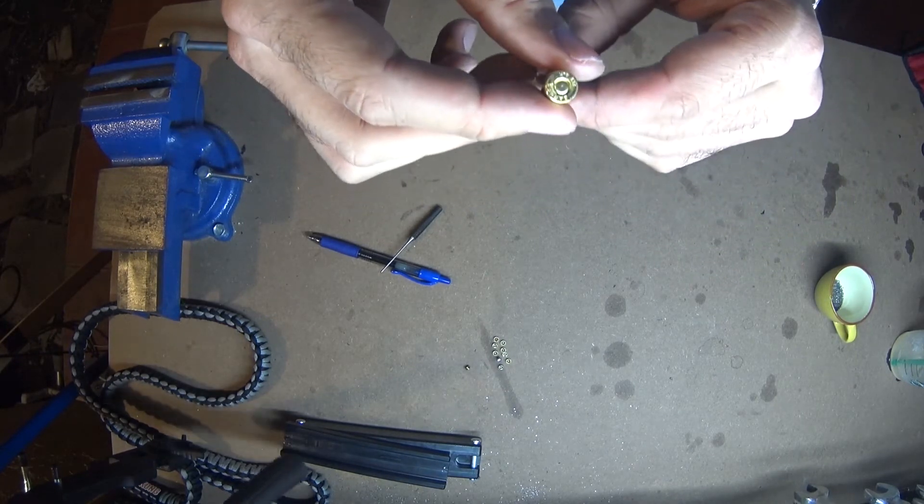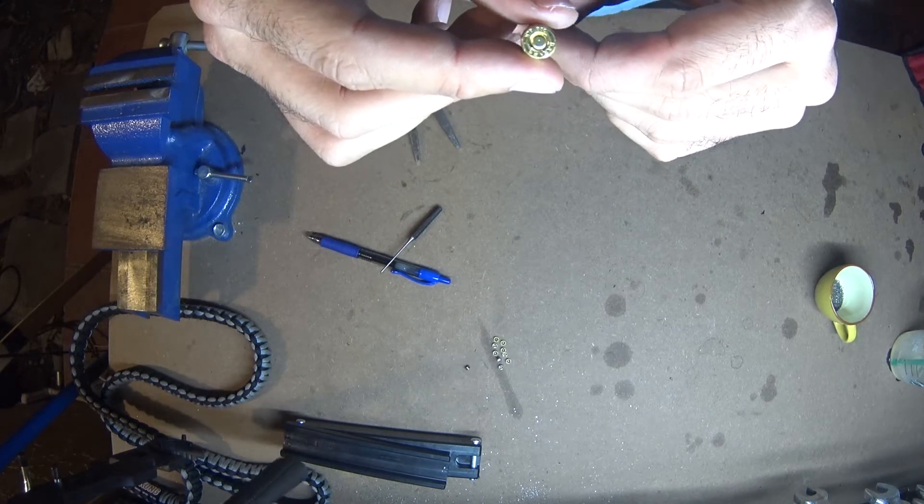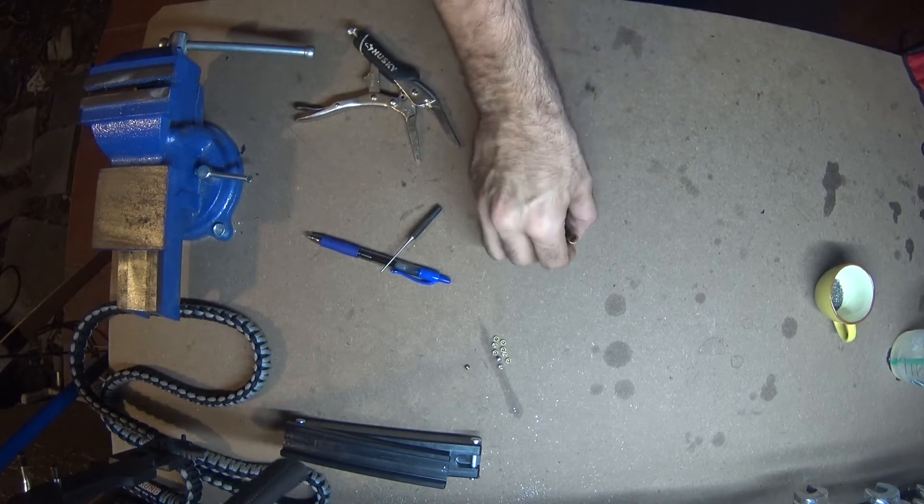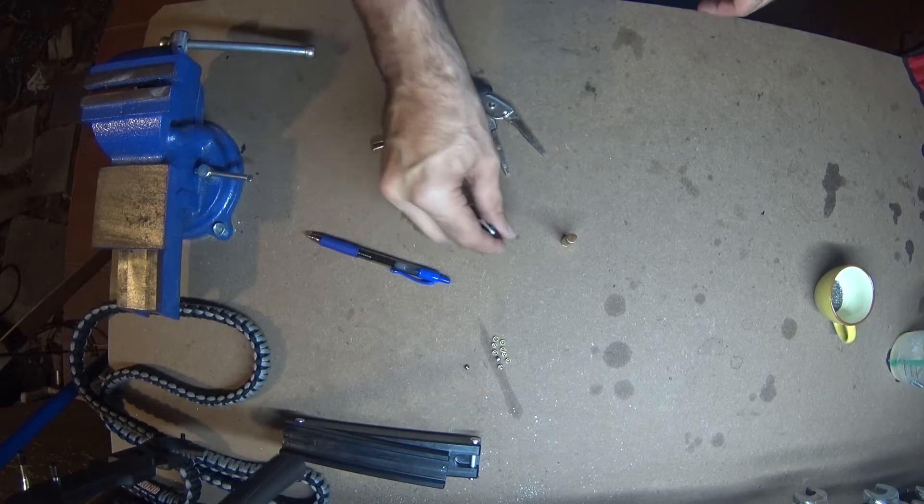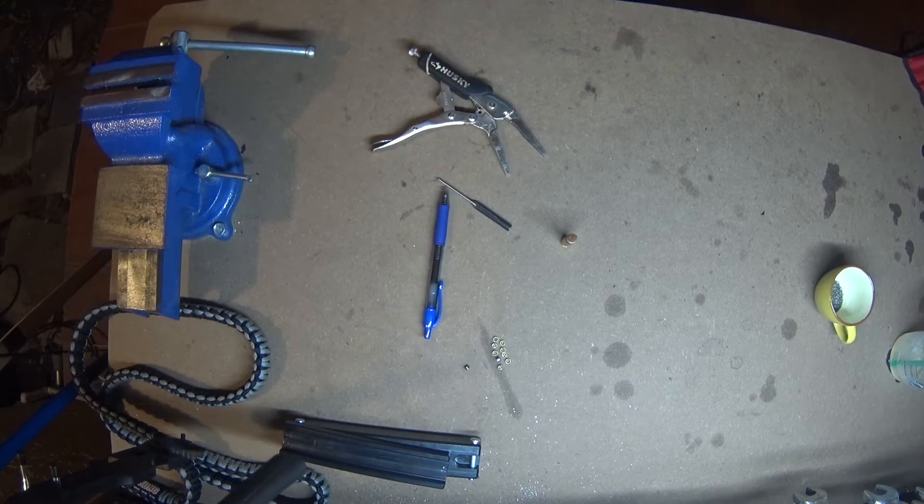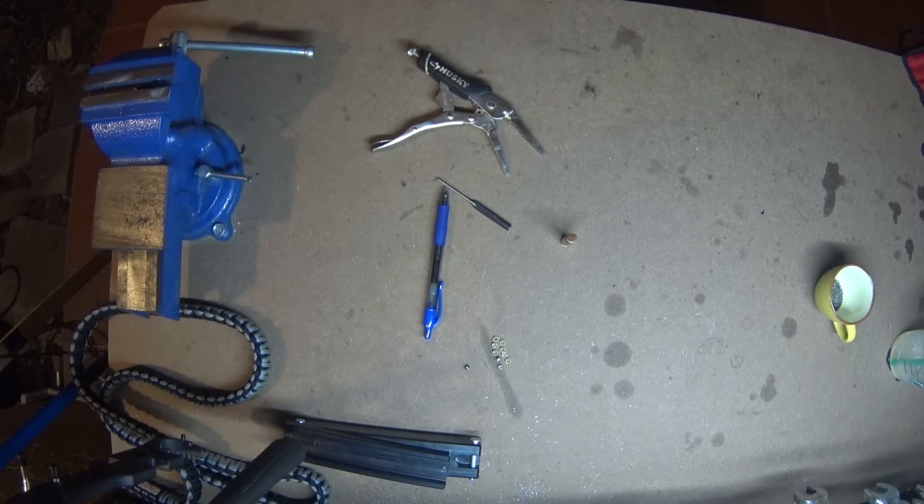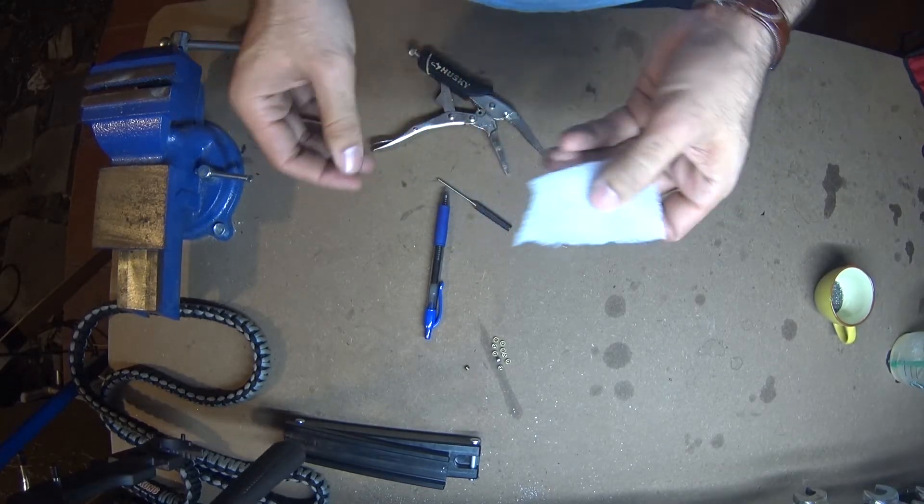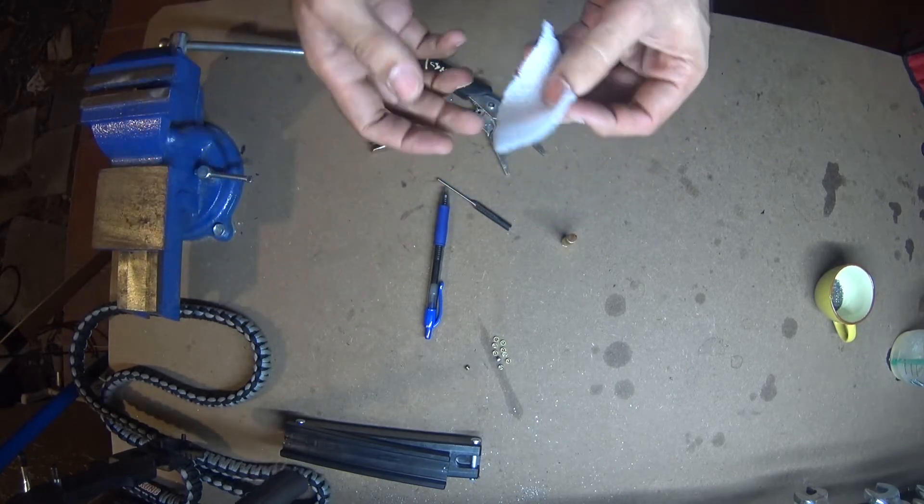So here you got a standard 300 blackout Barnes round. Pretty sure this is a Remington. Alright, so things you're going to need is a vise, a punch, a pen, and I'd like to use some of this. It's basically styrofoam wrap, it's like packing wrap.